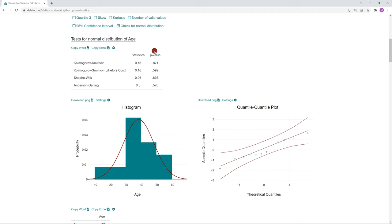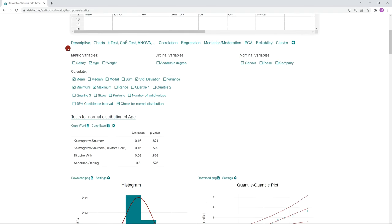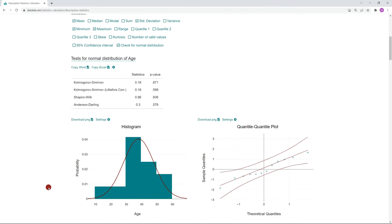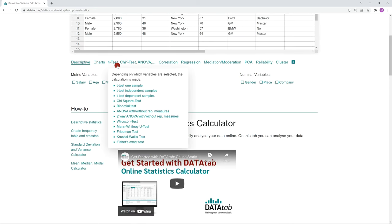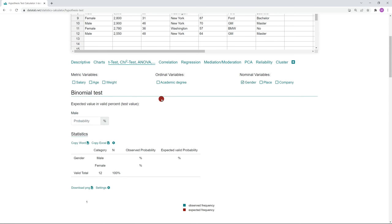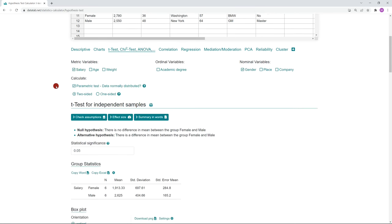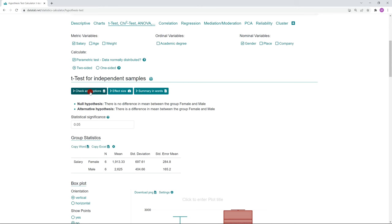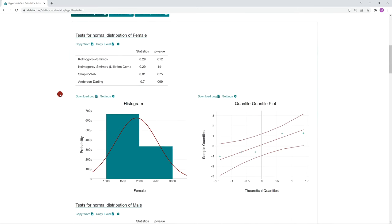I know that test procedures are not actually descriptive methods, but if you want to get an overview of your data, it's usually also relevant to look at the distribution of your data. Furthermore, if you calculate a hypothesis test, for example, whether gender has an influence on the salary of a person, then you can check the preconditions for each hypothesis test and you will also get the test for normal distribution.